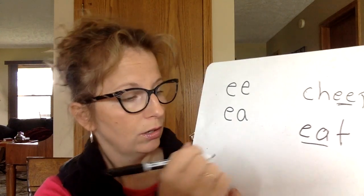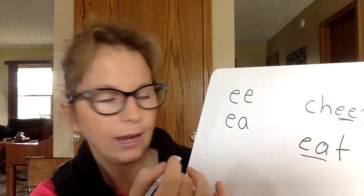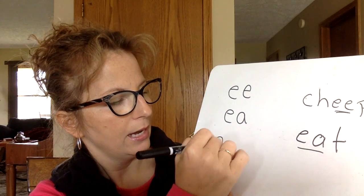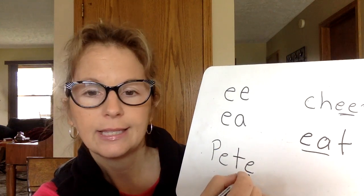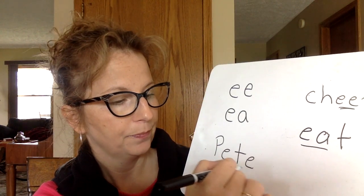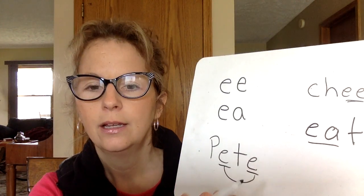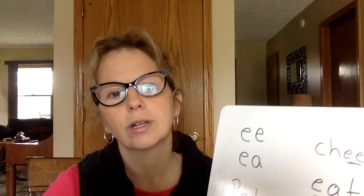From your first grade class, you probably know another way — like in the name 'Pete,' we have that silent E at the end making the vowel E say his name. That's another way to make the E sound. But what we've worked on in these lessons is E-E and E-A.